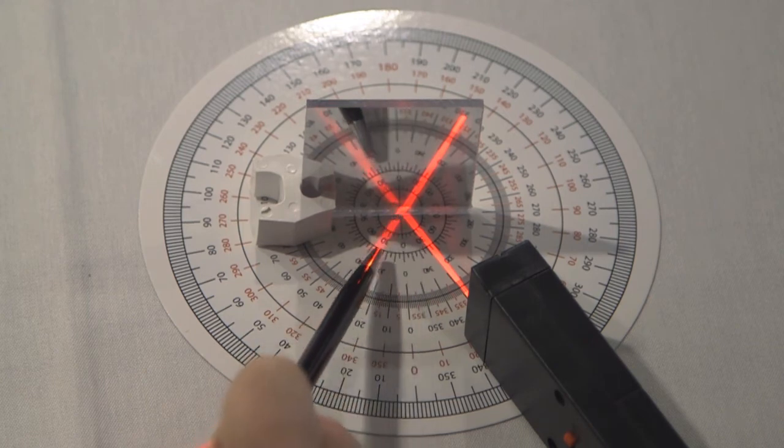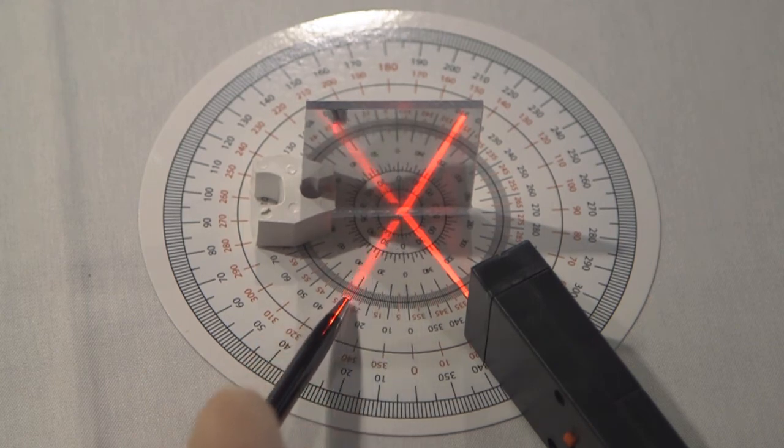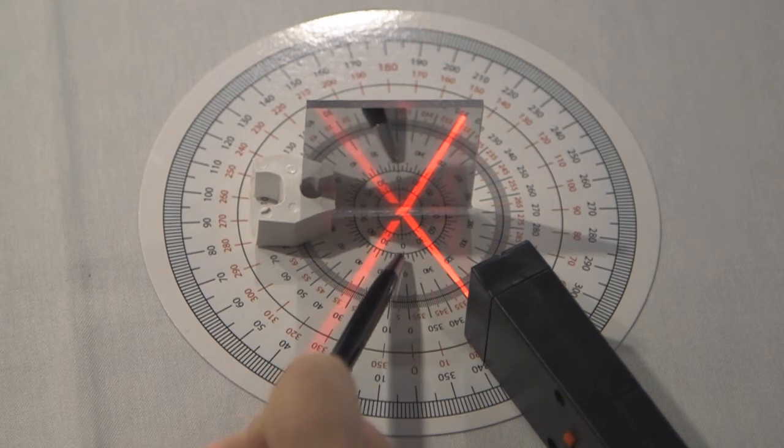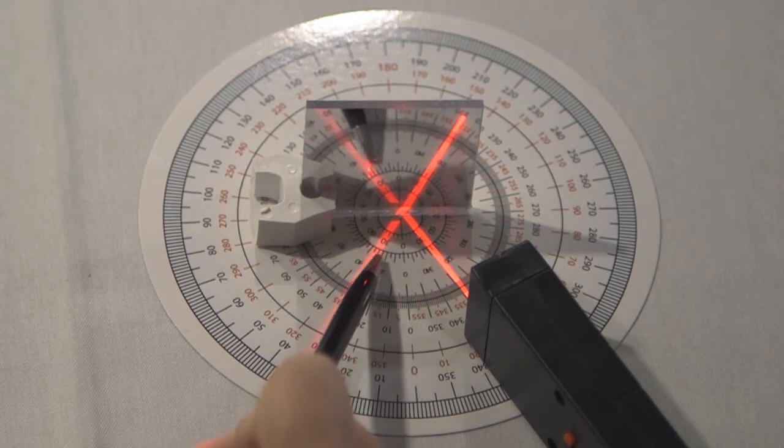And as it exits the mirror, it also passes directly through the 30 degree mark. So the angle between, or the reflected angle, the angle between the normal and the reflected ray is also 30 degrees.